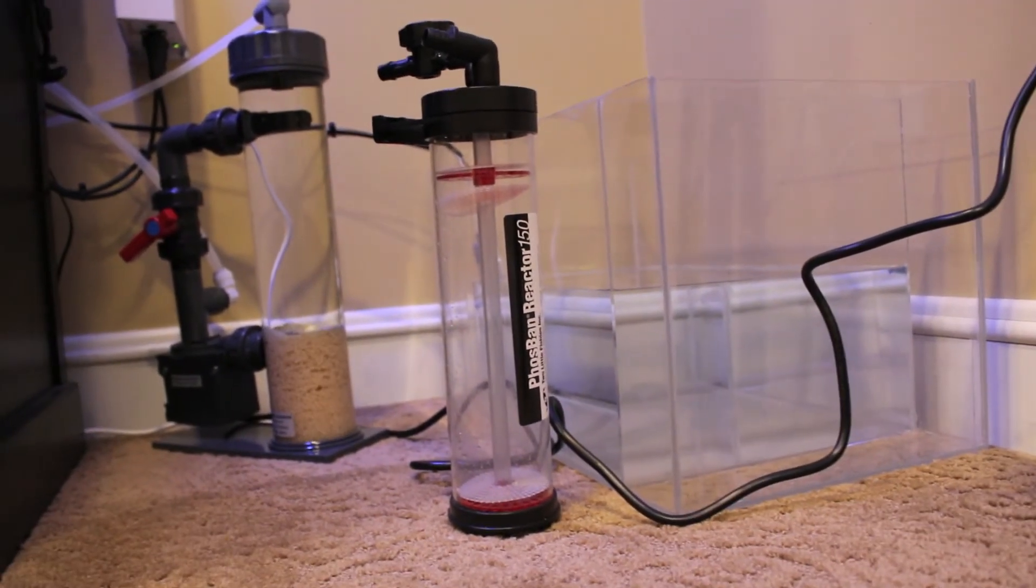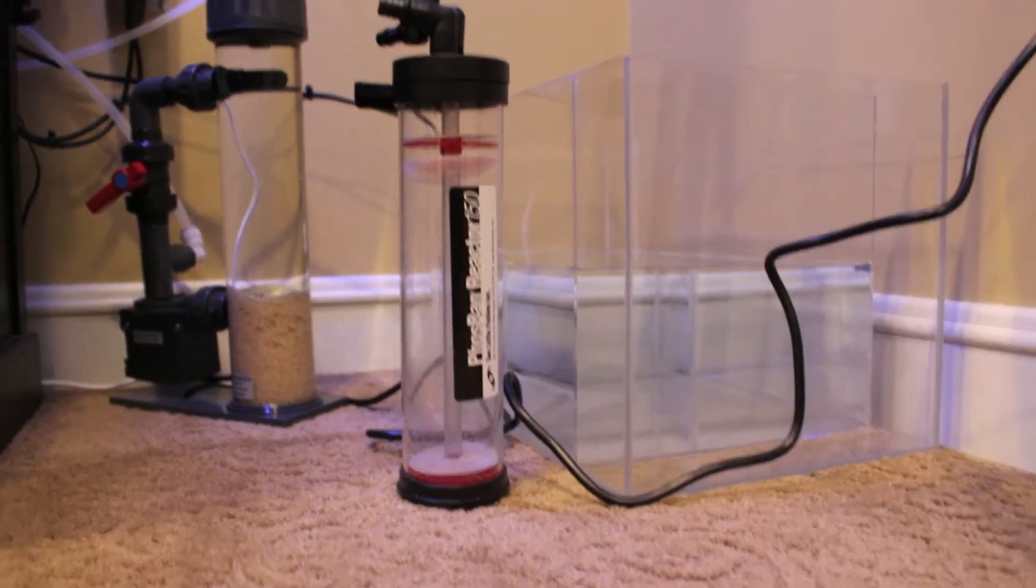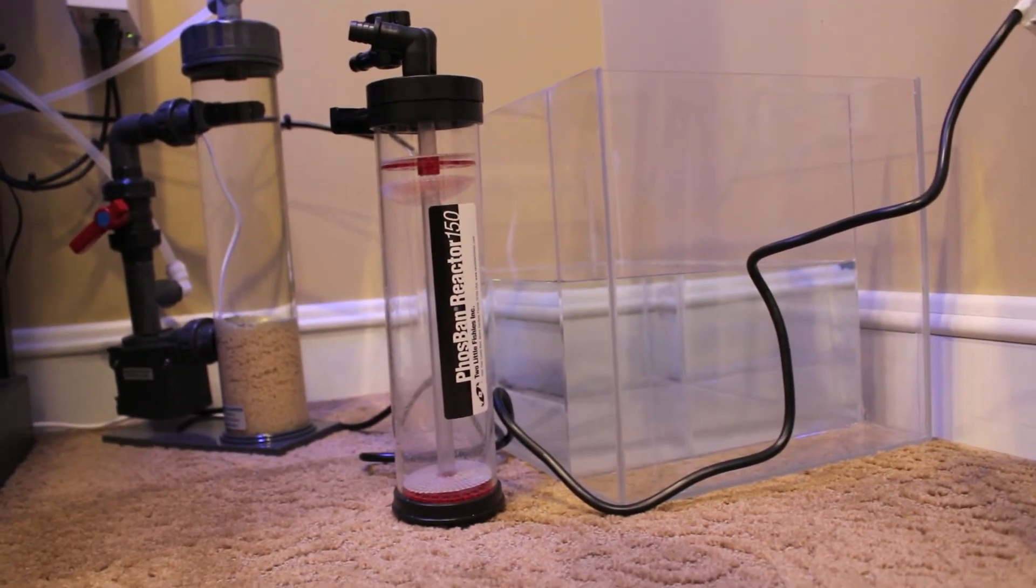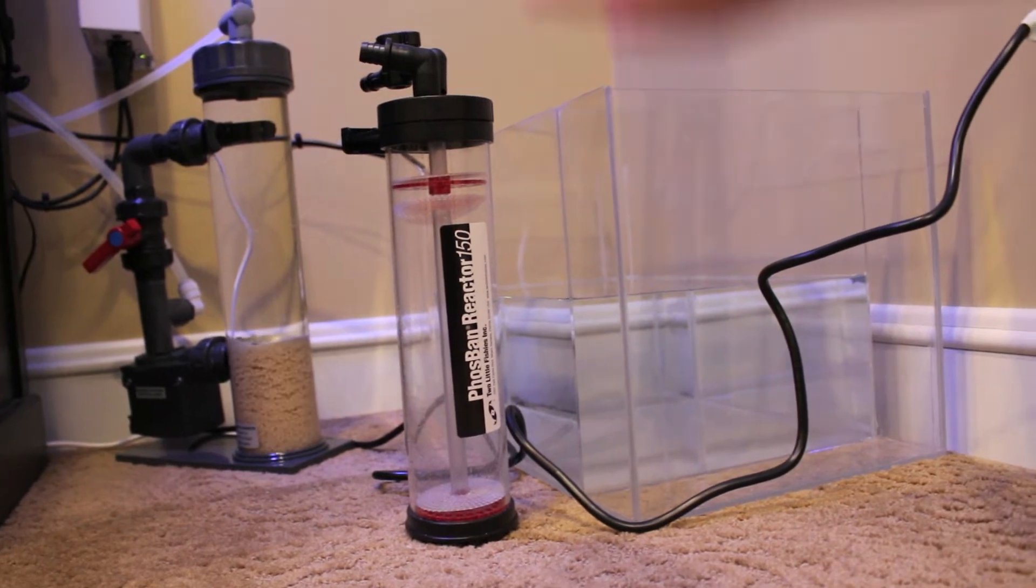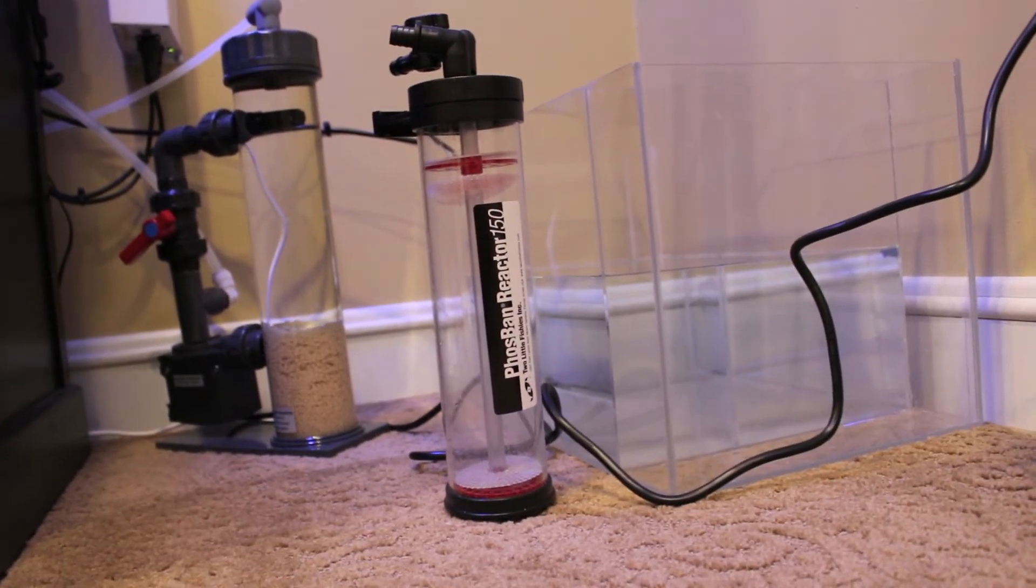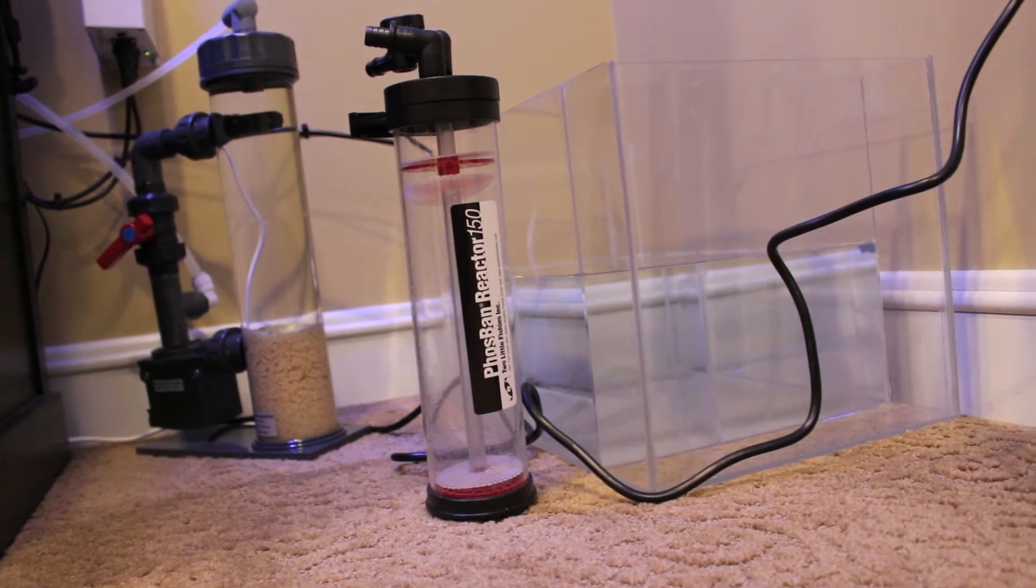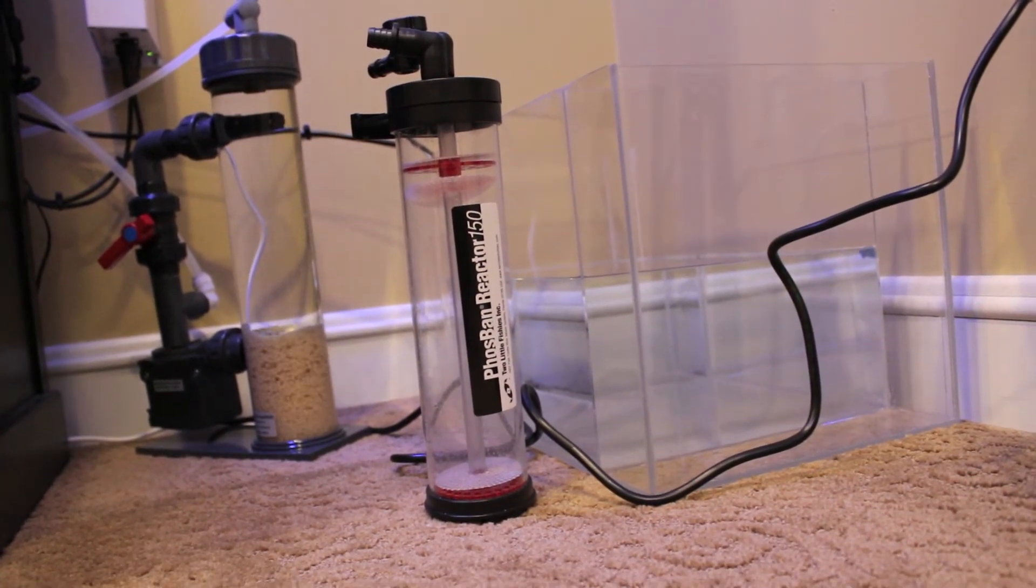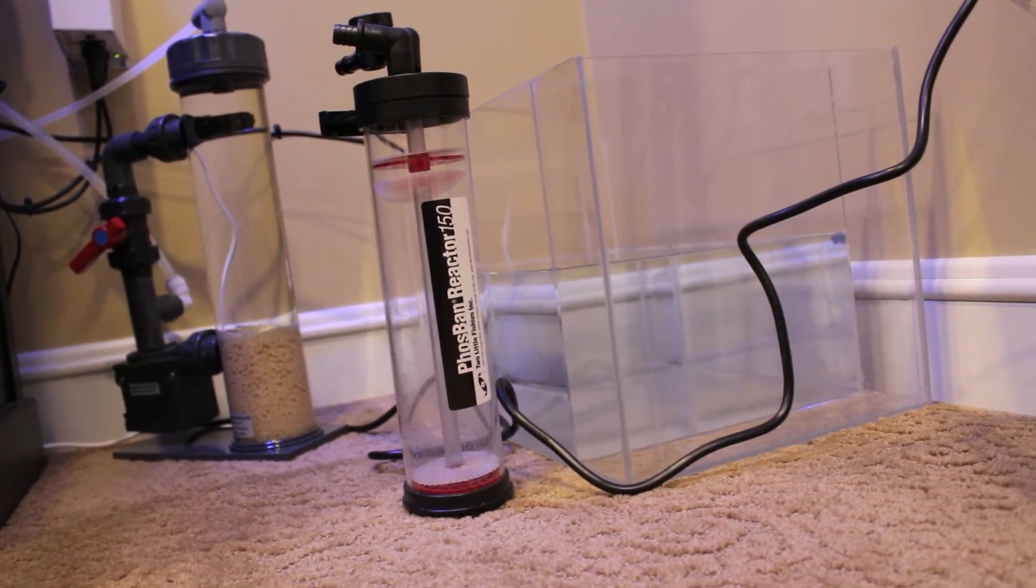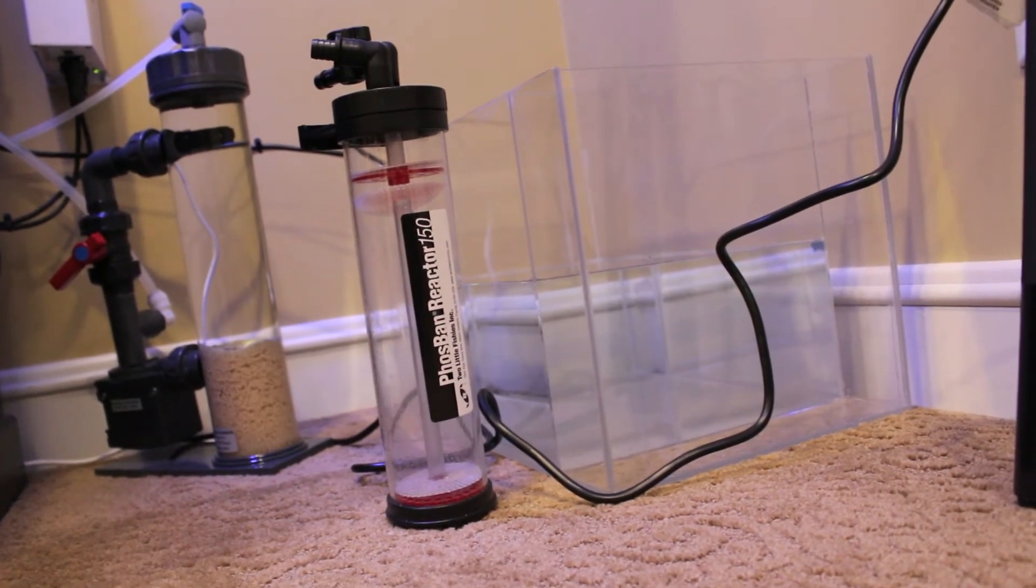So if you have a reactor like this Two Little Fishes or something a little bit more robust but the concept is the same, basically what that means is that the pump that's controlling the tumbling is also the amount of water coming in. Then you want to start very slowly when you introduce biopellets. When you first put your biopellets in, use 25% of the recommended dose of biopellets and let it go for a month. Monitor your nutrient levels, and then once you get past that...